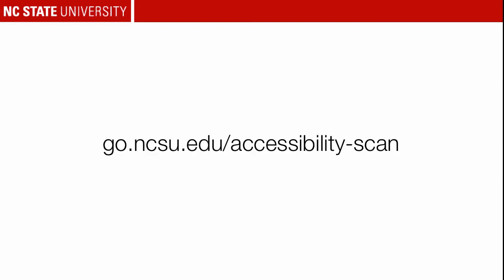Again, to get to your reports or to request your site be added to the scan, just go to go.ncsu.edu/accessibility-scan. So let's go see what these reports look like and how to use them.